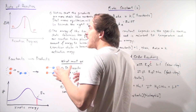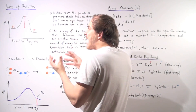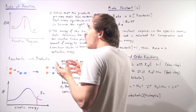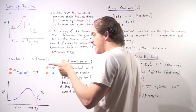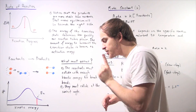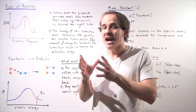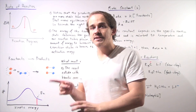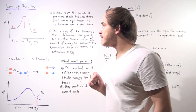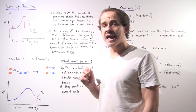In order to get from reactants to products, we have to undergo the transition state. The transition state is something that cannot be isolated — it cannot be examined in the same way that reactants and products can.